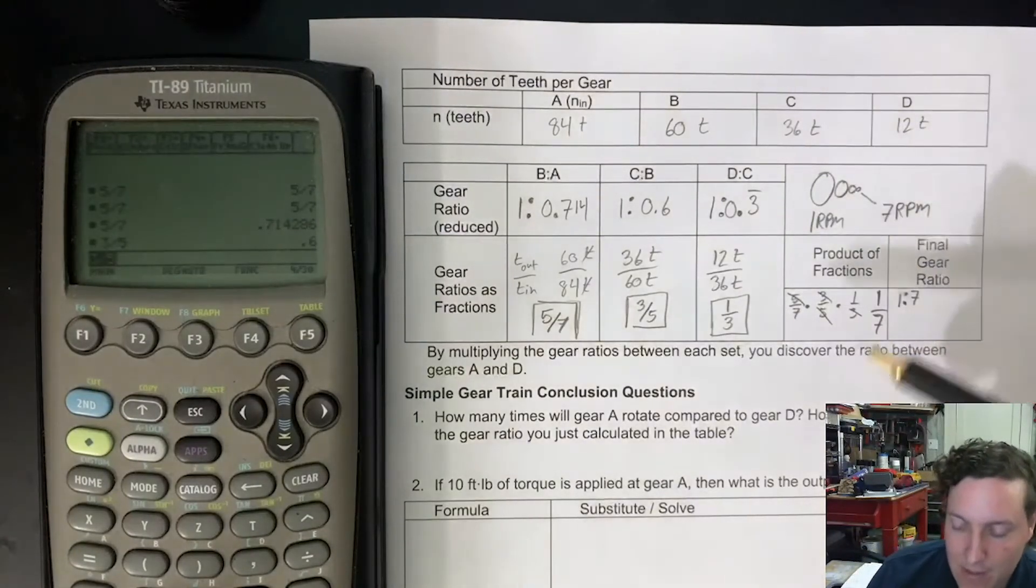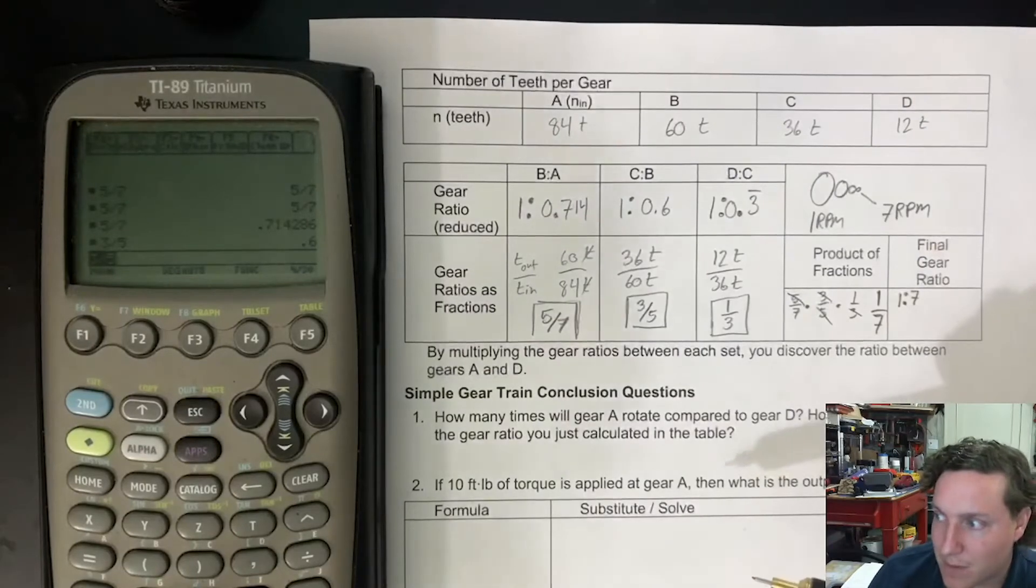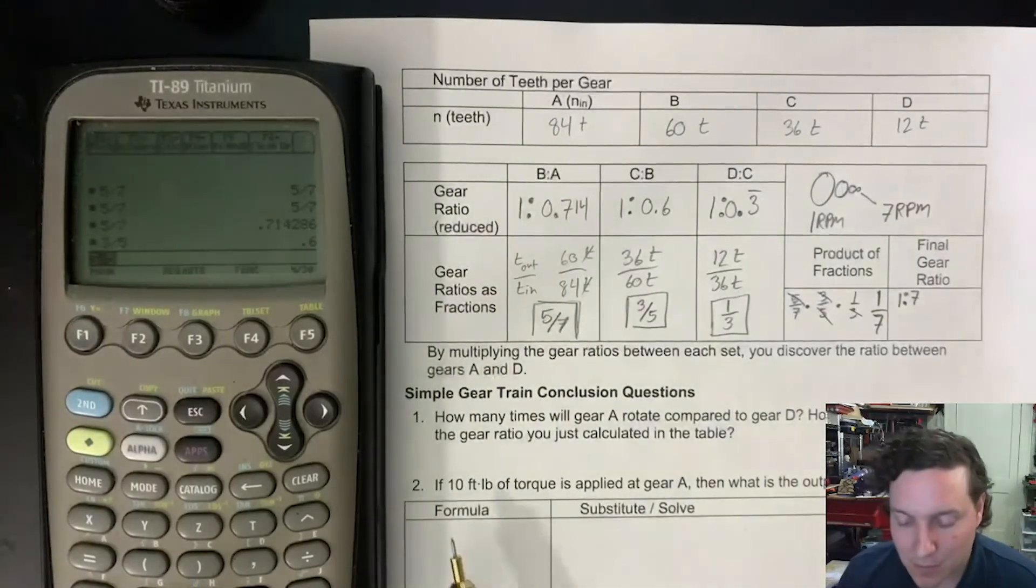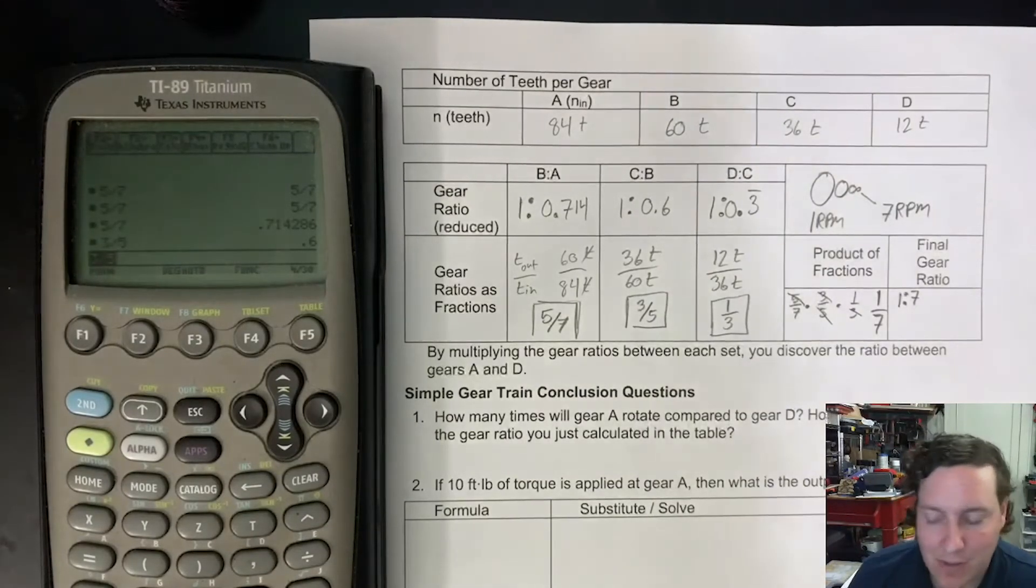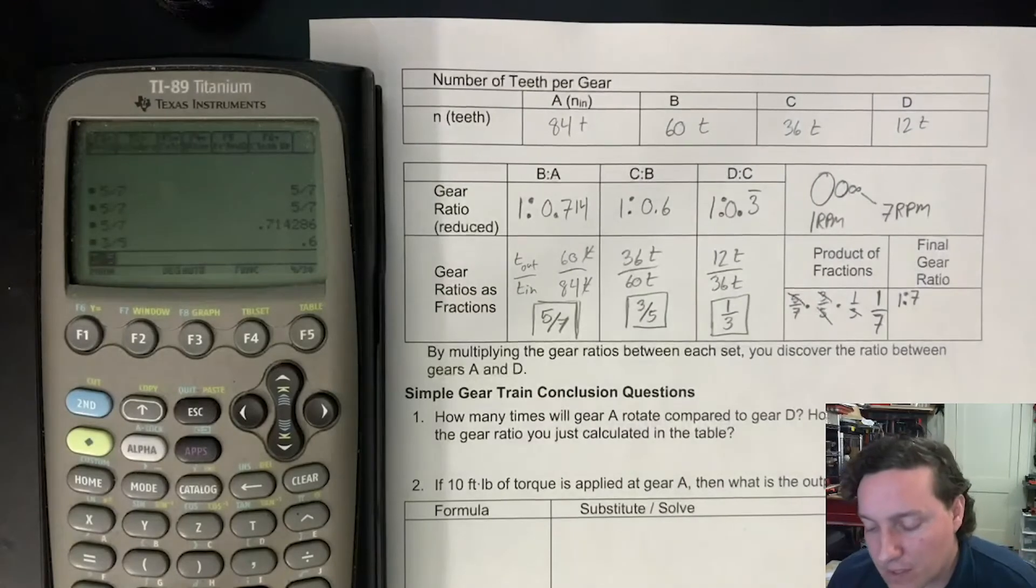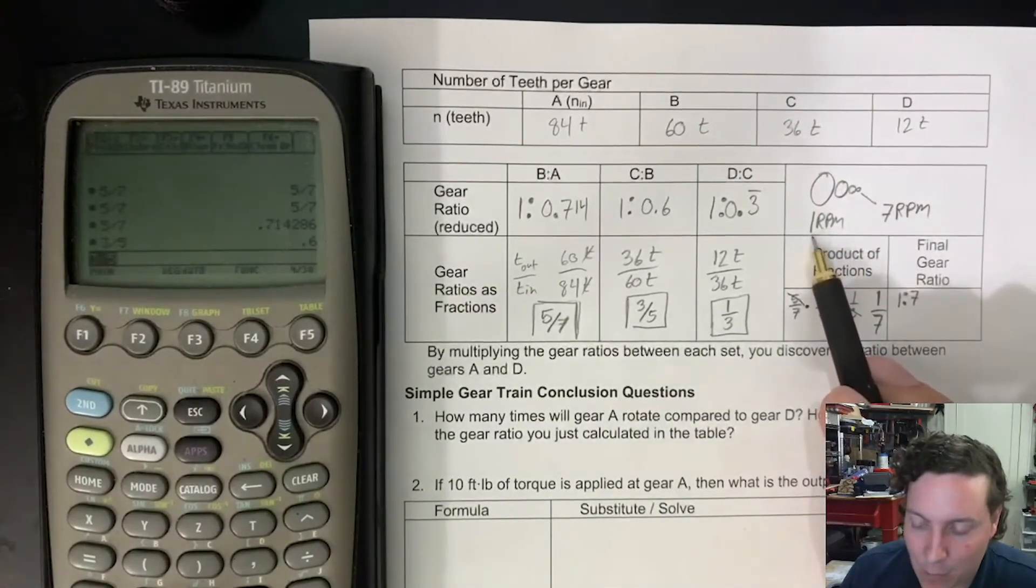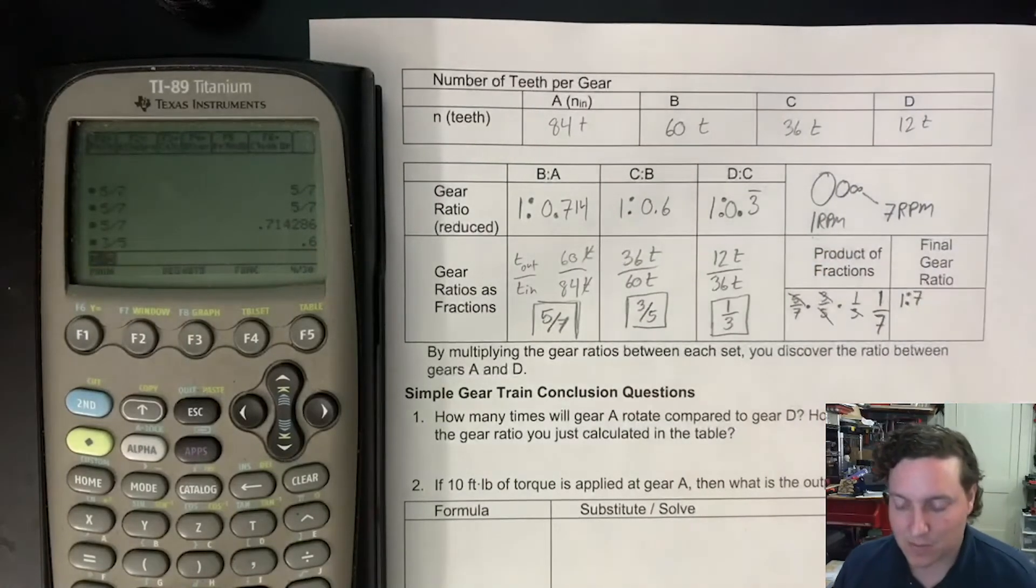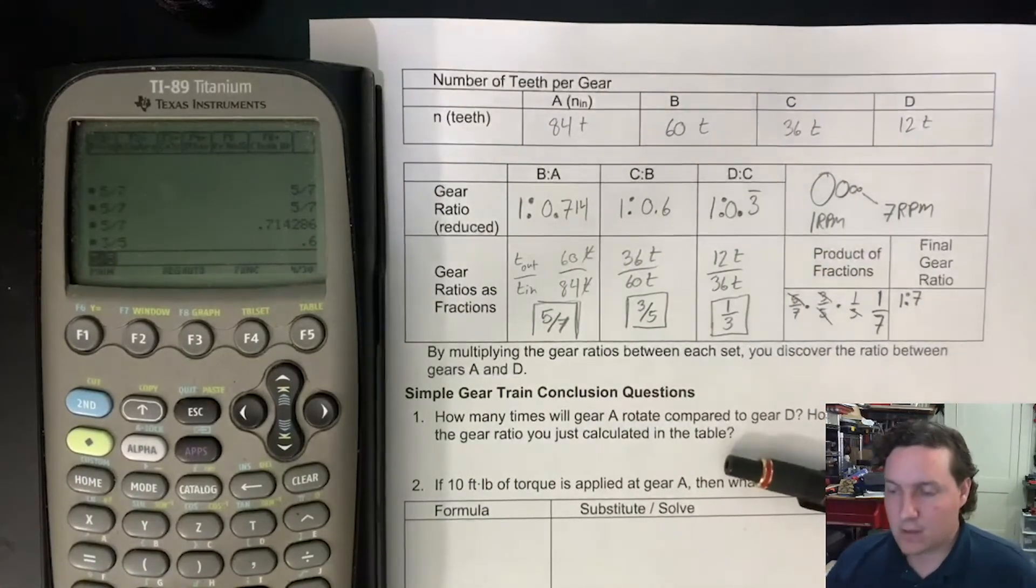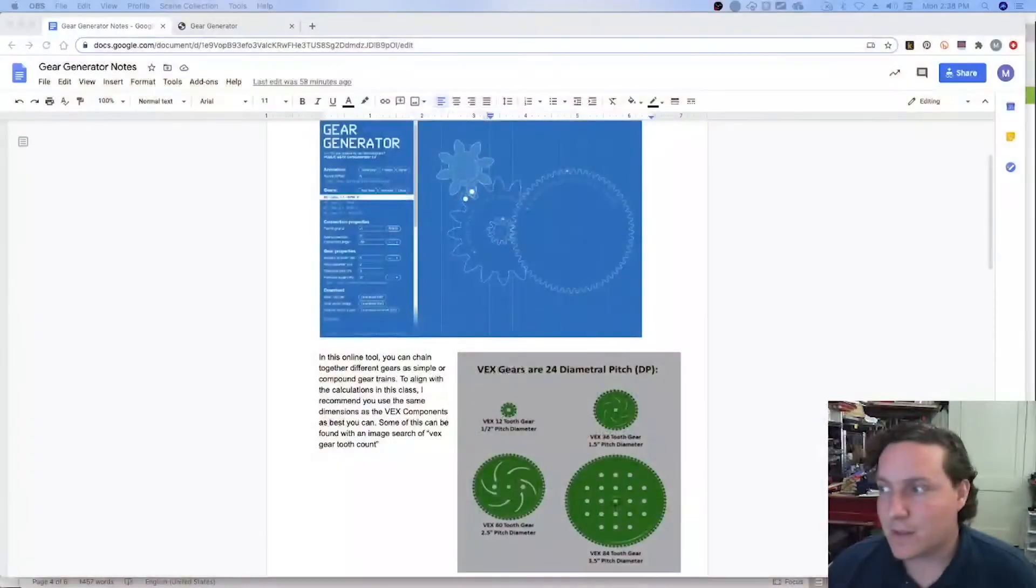So that's the basic calculation. Now you will be doing some other bits about what happens when you apply 10 pounds of force to gear A, what's that going to do to your force in an ideal situation. But we can check our numbers and see if we actually have that difference of one rotation per minute versus seven rotations per minute. So here's where we go ahead and pop into the gear simulator.